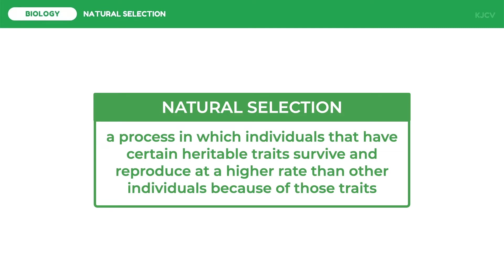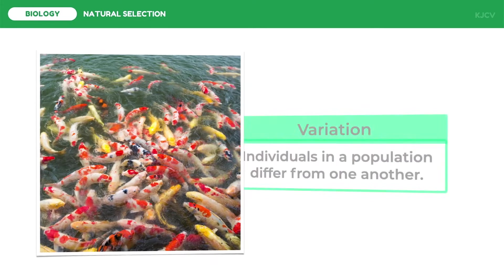Darwin noticed that organisms share many characteristics and that there are characteristics that enhance the survival of species. From this he perceived adaptation to the environment and the origin of new species as closely related processes. Thus we have the theory of natural selection. There are different principles governing natural selection. The first is variation.